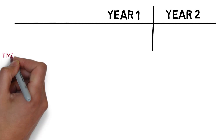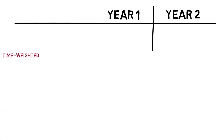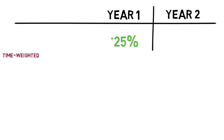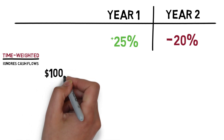Let's start with the time-weighted rate of return calculation. This is the calculation shown, for example, on mutual fund marketing materials. Let's say we have a mutual fund that does really well in its first year and increases by 25%. But in year two, the fund loses 20%. To figure out the time-weighted return, which ignores the timing of contributions or withdrawals, we can use any lump sum investment amount and see what would happen to it over these two years without adding or taking away money during this period. If we use a starting lump sum of $100,000,